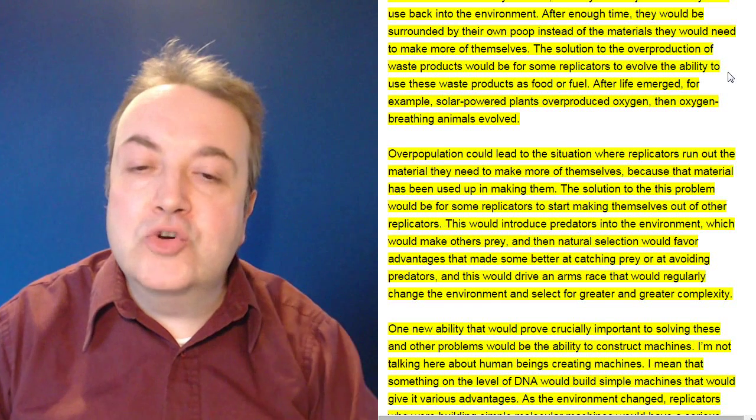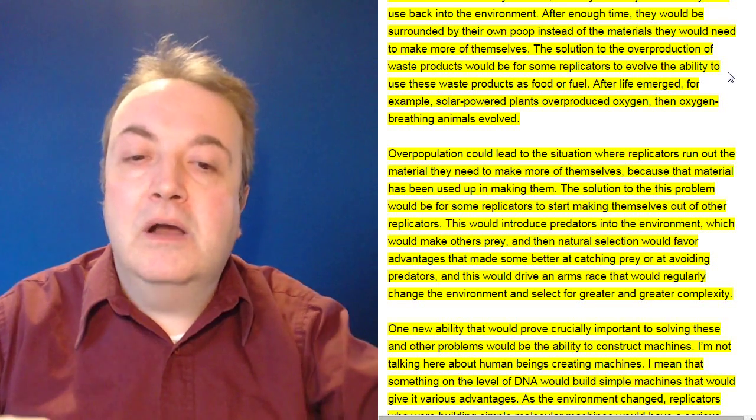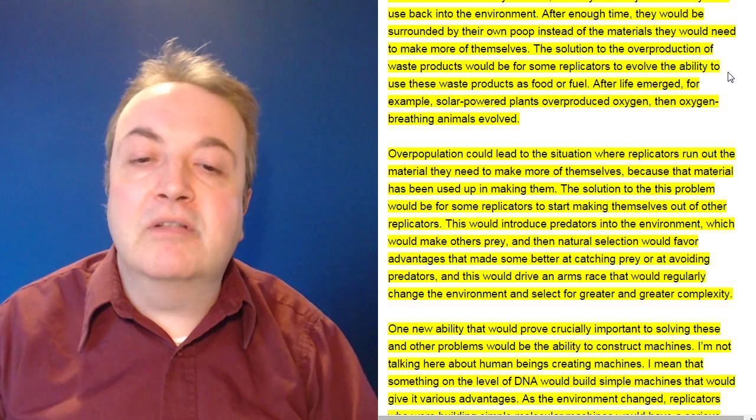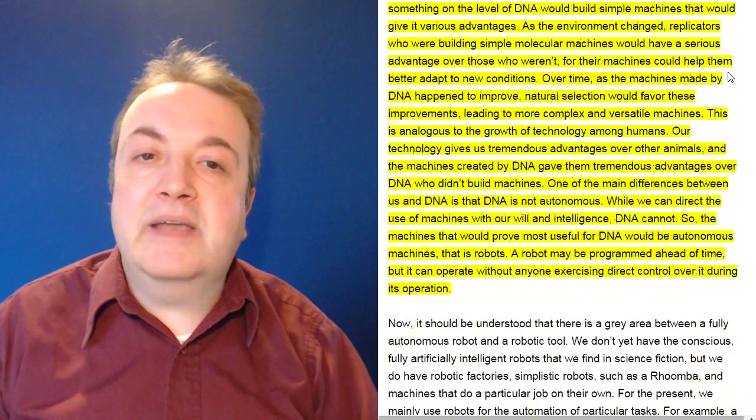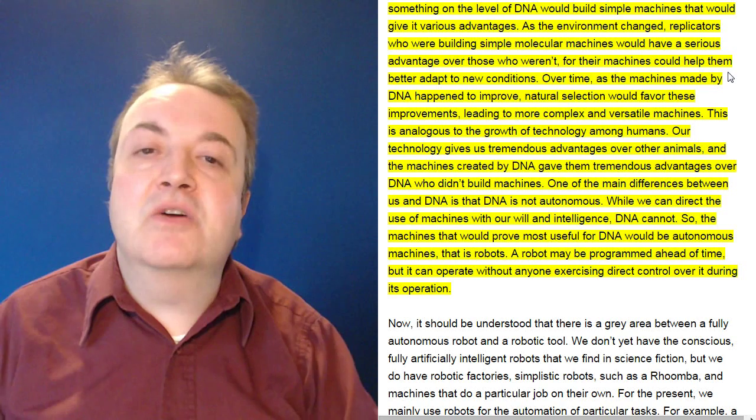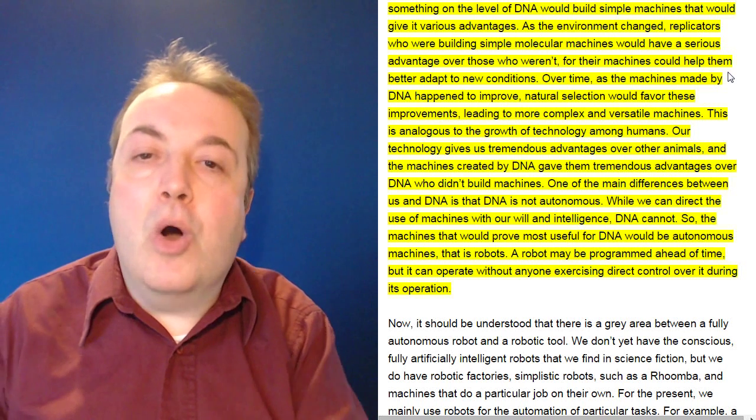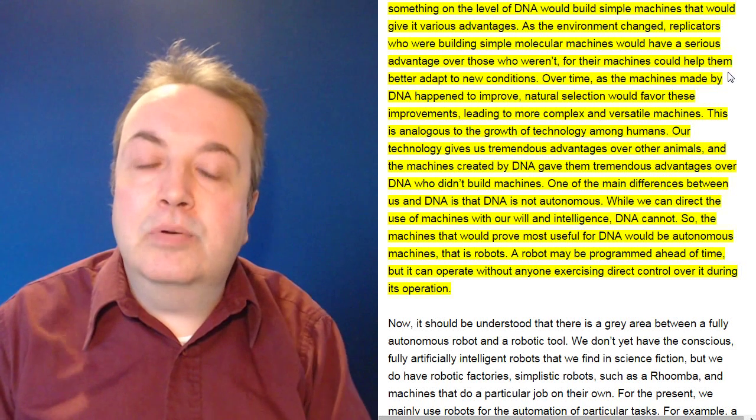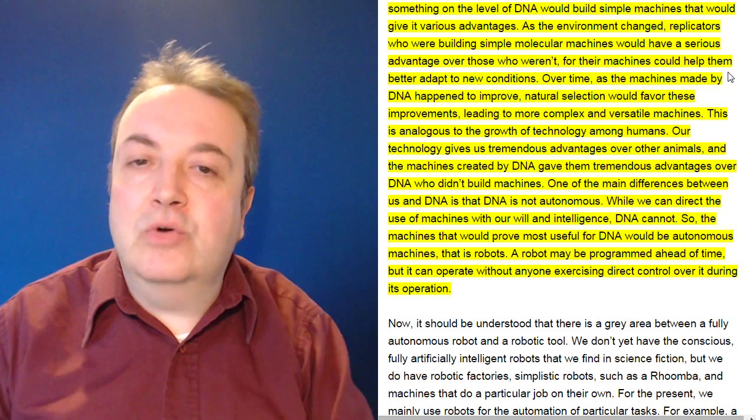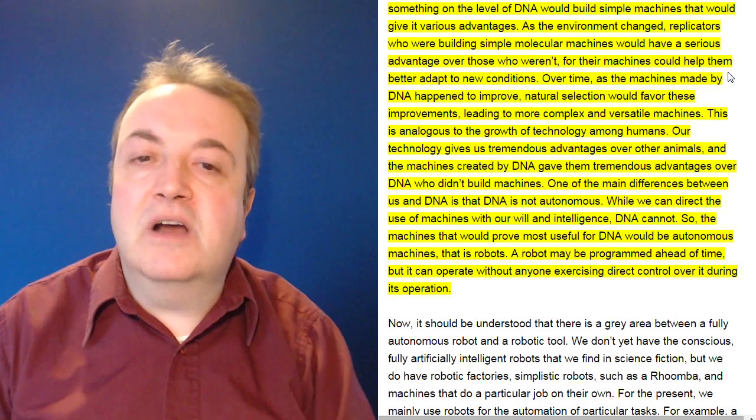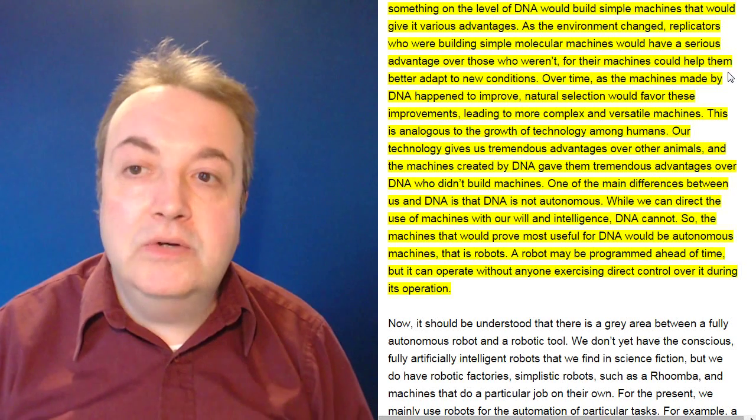One new ability that would prove crucially important to solving these and other problems would be the ability to construct machines. I'm not talking here about human beings creating machines. I mean that something on the level of DNA would create simple machines that would give it various advantages. As the environment changed, replicators who were building simple molecular machines would have a serious advantage over those who weren't, for their machines could help them become better at adapting to new conditions. Over time as the machines made by DNA happened to improve, natural selection would favor these improvements, leading to more complex and versatile machines. This is analogous to the growth of technology among humans. Our technology gives us tremendous advantages over other animals.